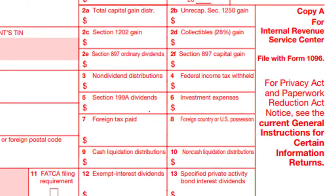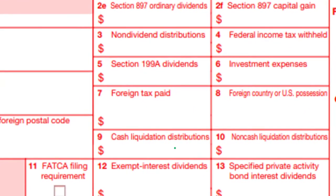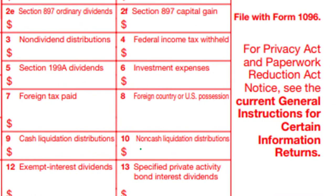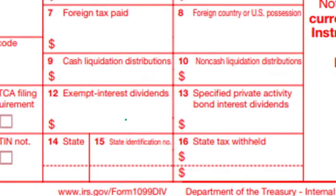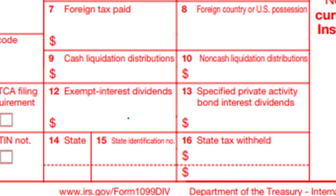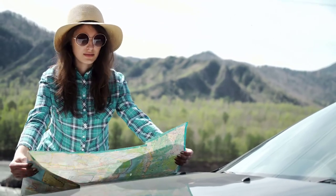Section 199A dividends, investment expenses, foreign paid tax if applicable, foreign country or U.S. possession, cash liquidation distributions - which means the company is liquidating or closing, and non-cash liquidation distributions as well. These liquidation distributions could have different tax treatments than a normal dividend distribution. There are also exempt interest dividends, specified private activity bond interest dividends, and state information below. For any questions on these boxes, go to the instructions - if you don't get them with the form, you can always look them up on the IRS website.